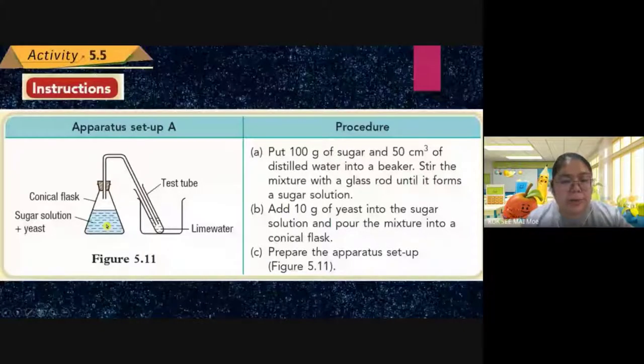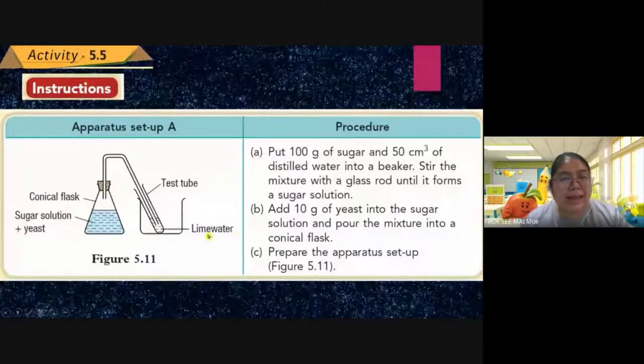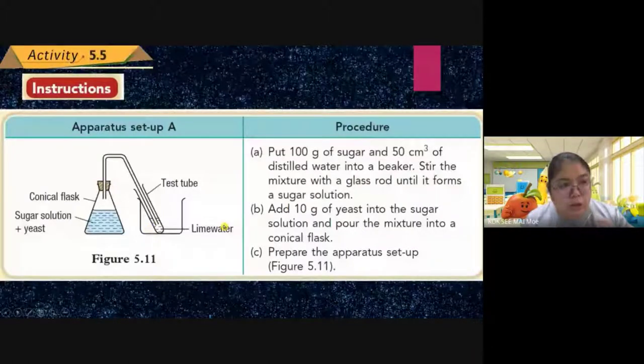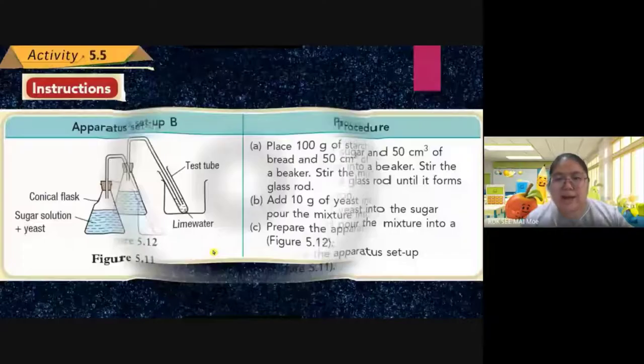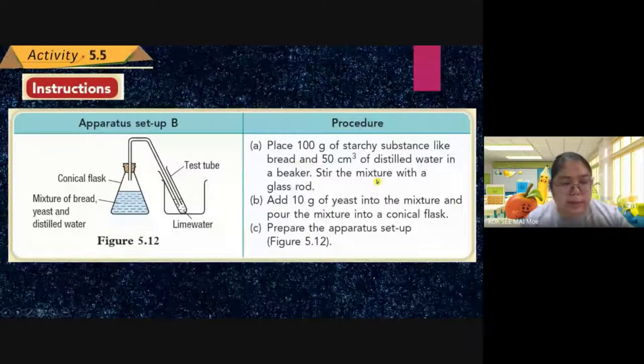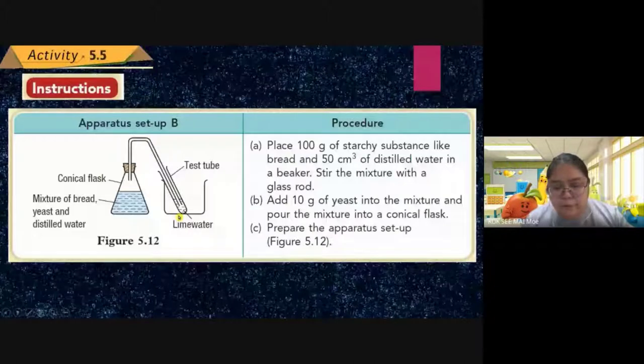Then connect a tube to the conical flask — gases produced will be tested using lime water. For set B, the same process is used but with bread (carbohydrate) instead of sugar: add distilled water, stir, and add 10 grams of yeast. For the third set, they use banana mixed with yeast and distilled water. Three different situations are tested.